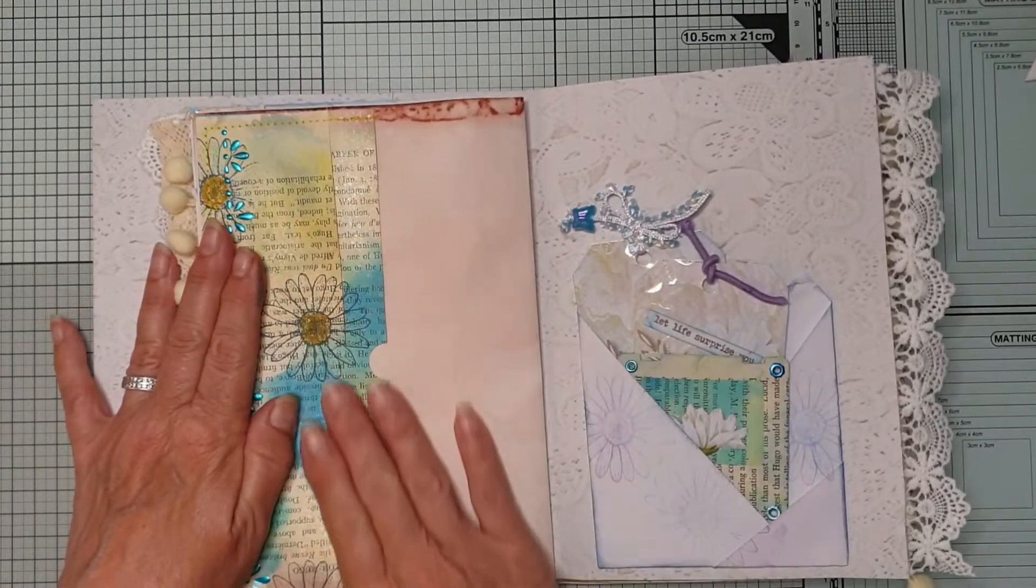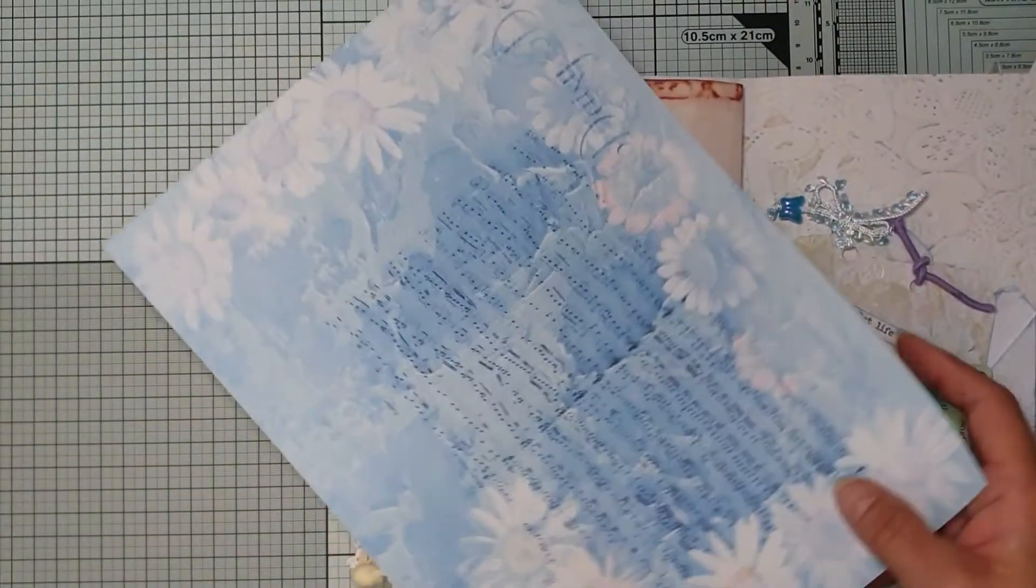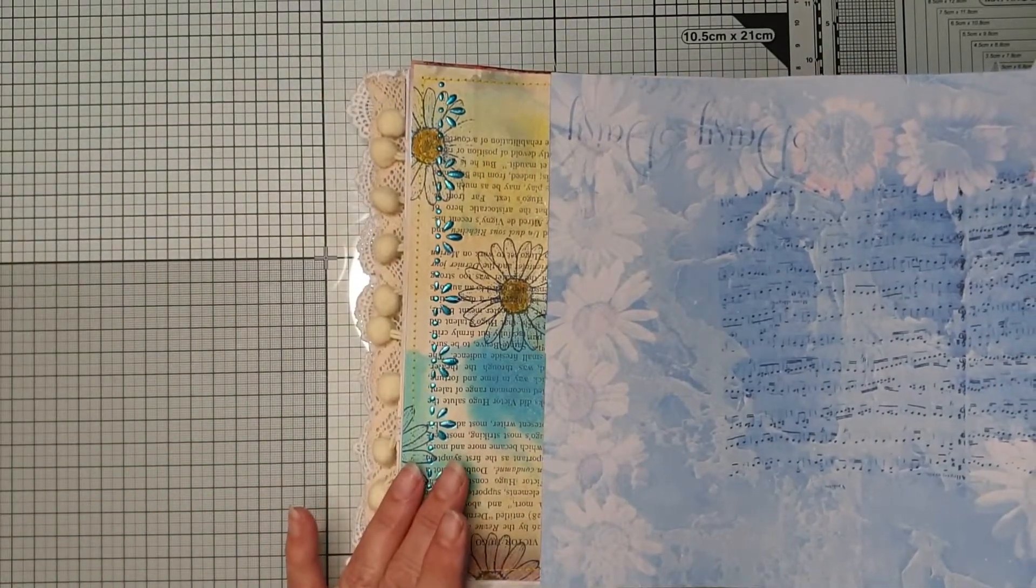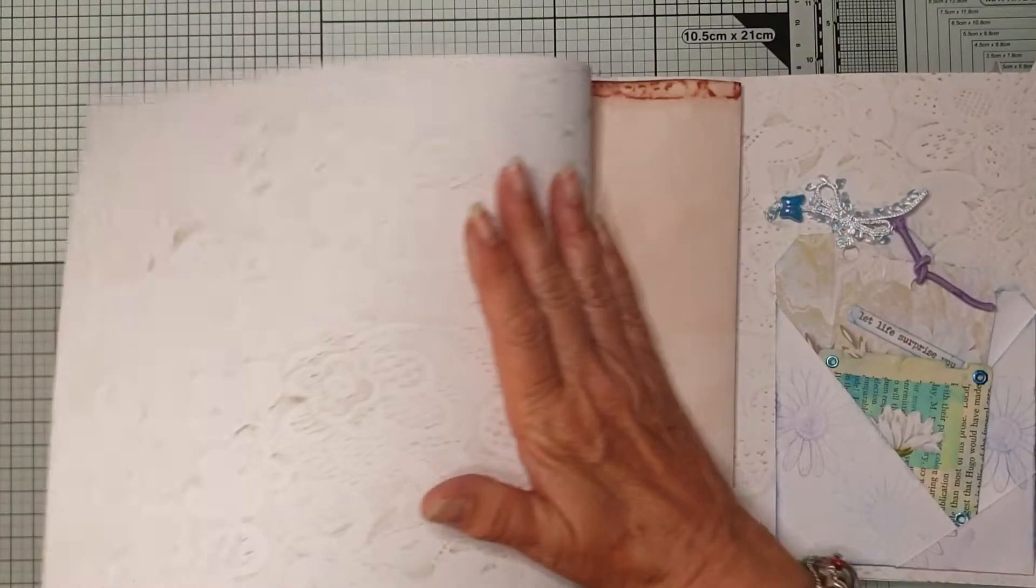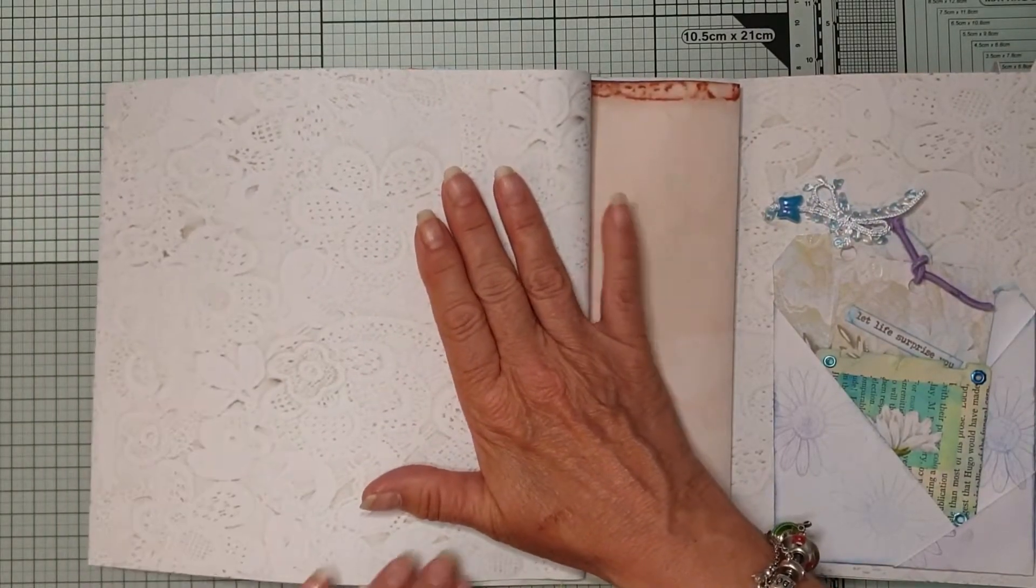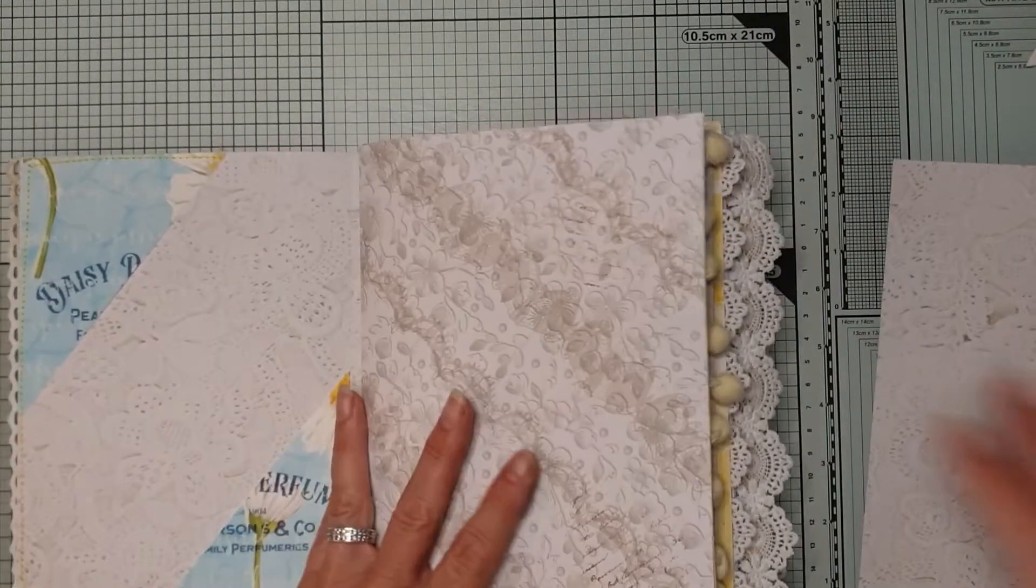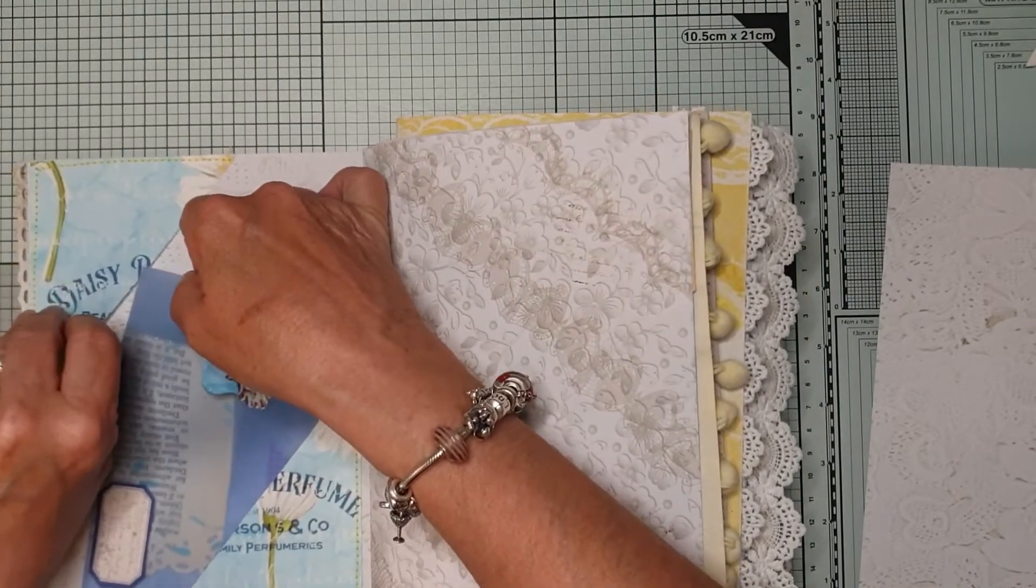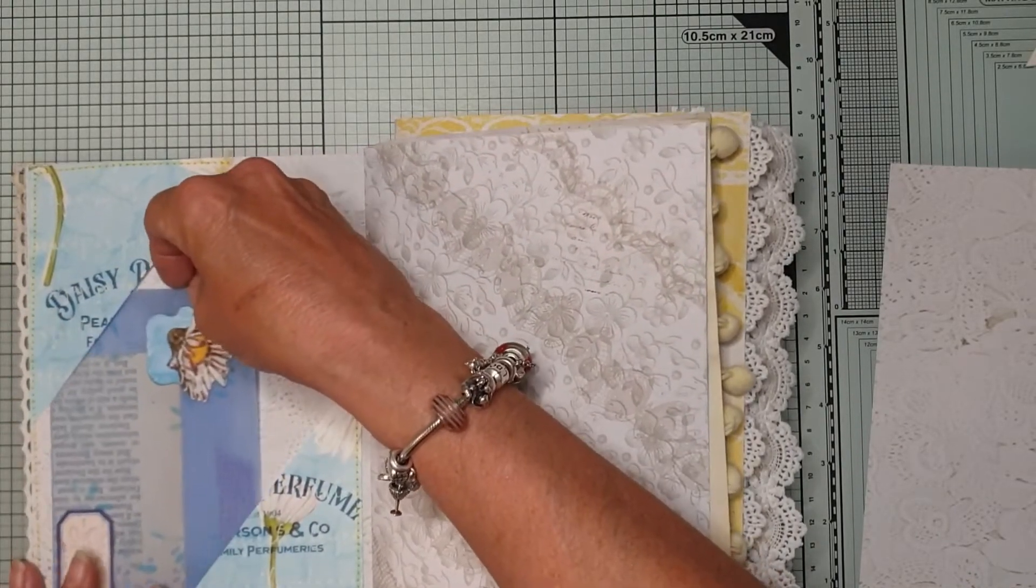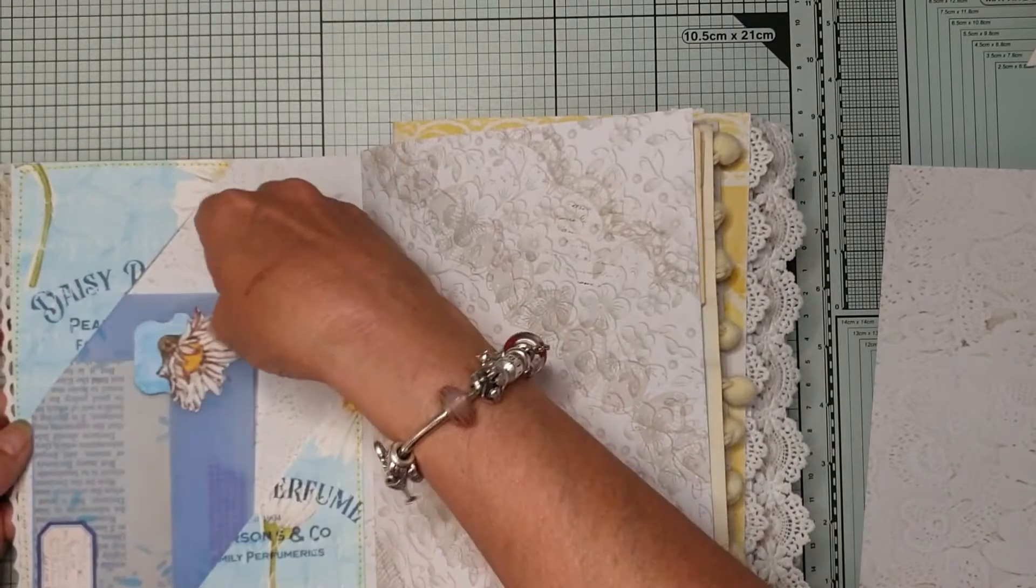So this is the one that we're doing a pocket for and this is one of the digital papers and I thought it would go nice. This one goes in here. So I did a corner pocket out of one of the digital papers and I did the corner at the bottom and at the top and you can put long envelopes, that's not as long.